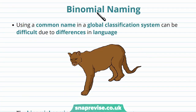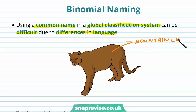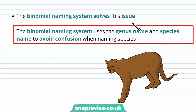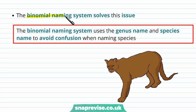In order to classify organisms into a particular rank, we need a common global way of classifying them — a global classification system. This can be quite difficult because of differences in language. For example, an animal could be called a mountain lion or a puma — various names for the same organism. To solve this problem, we have a binomial naming system, which uses the genus name and the species name to avoid any confusion.